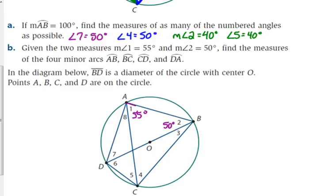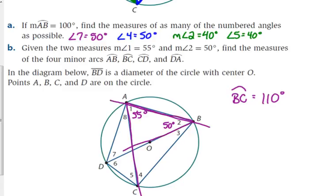BC is the intercepted arc for angle 1, so the measure of arc BC is 2 times 55, which is 110 degrees. Angle 2 intercepts arc AD. So the measure of arc AD is 2 times 50, which is 100 degrees.